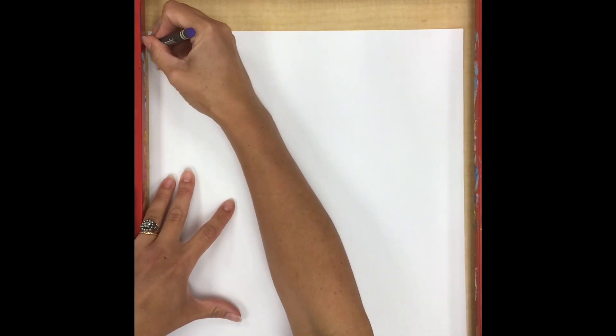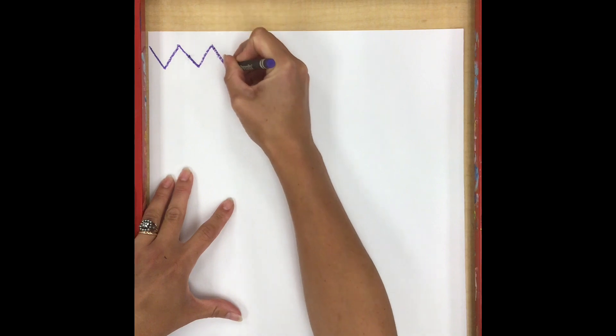So I'm just going to pick any color and I'm going to start at the top and draw one of the lines that I practiced on my worksheet.